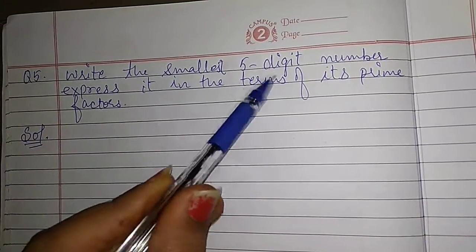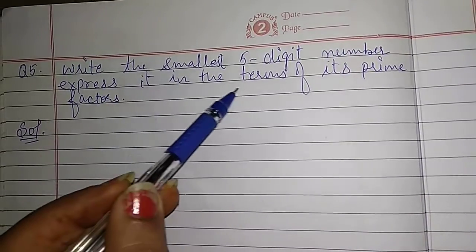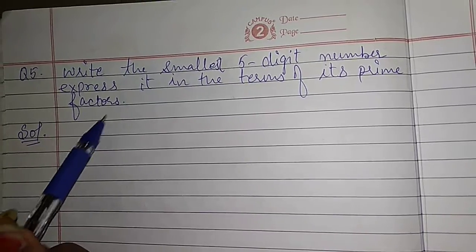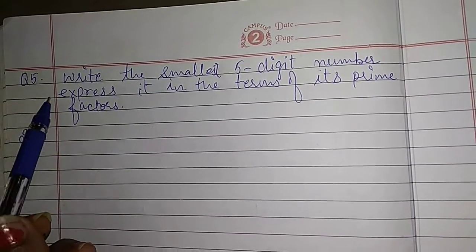Write the smallest 5-digit number. Express it in the term of its prime factors. This question is similar as question number 4.